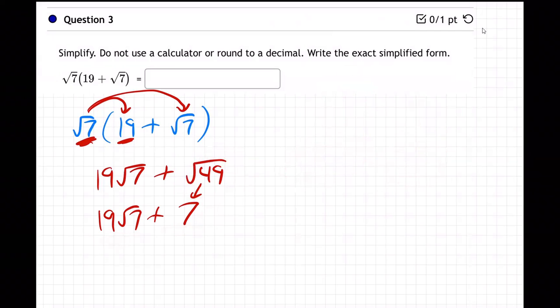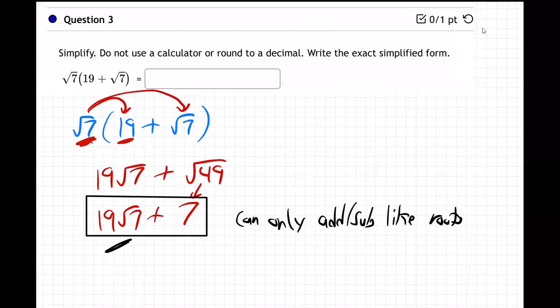And now can we add these? No, no, no. We're done. This is the final answer right here. Why? Because you can only add or subtract like roots, right? And these aren't like. Why? Because this one has a root seven and this one has no root at all. So we cannot add these. We're done right there. There we go.